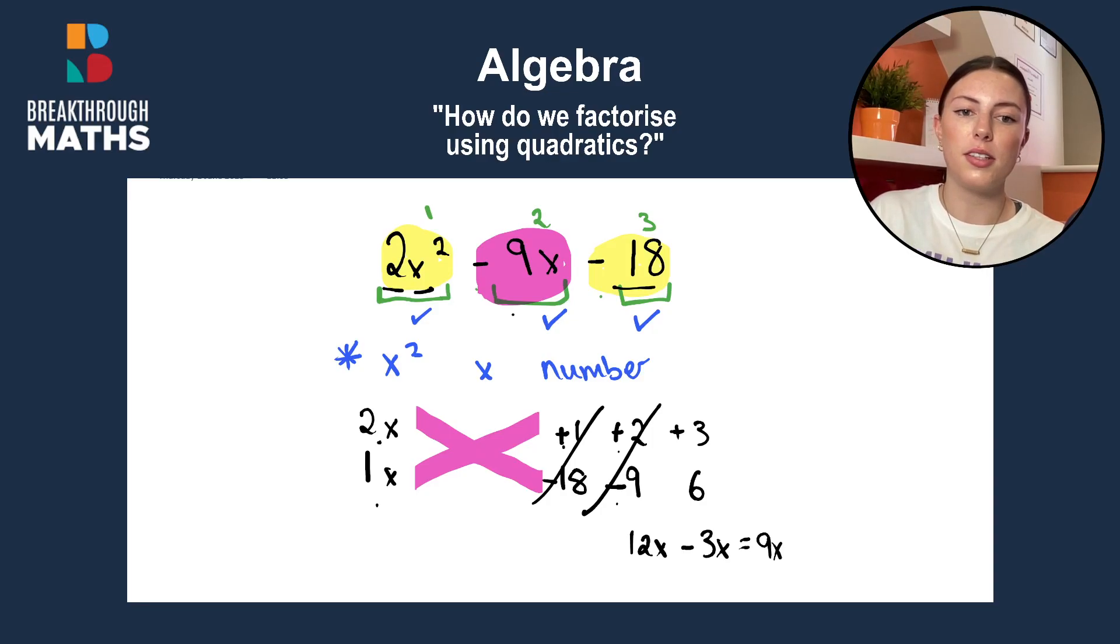So we'll again change around the sign. So we'll have plus 3 and minus 6. So plus 2 minus 6 gives us minus 12x. And plus 3 by x is plus 3x. And that gives us what we want in the middle of minus 9x. So we know that this is the pair we are going to choose here. Plus 3 and minus 6.